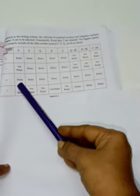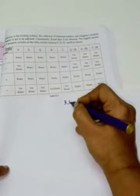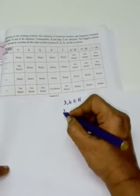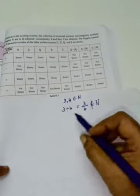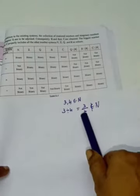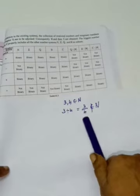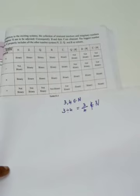For natural numbers: plus is a binary operation; minus is not — since 3 minus 4 equals minus 1, which does not belong to N; multiplication is a binary operation; division is not — since 3 divided by 4 equals 3 by 4, which does not belong to N. So natural numbers under division are not closed, meaning division is not a binary operation on N.